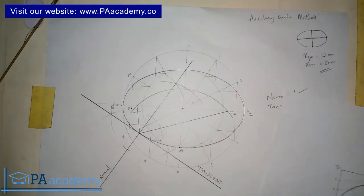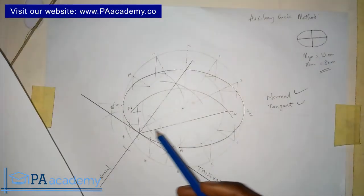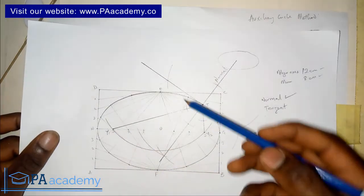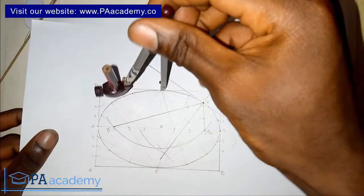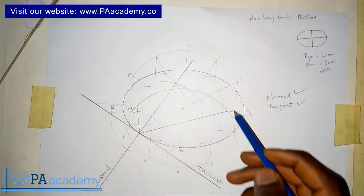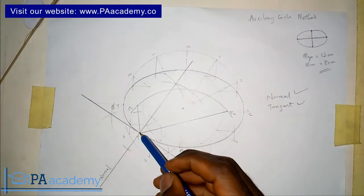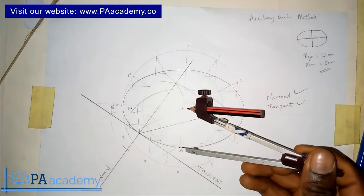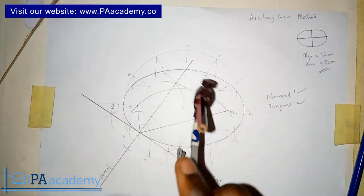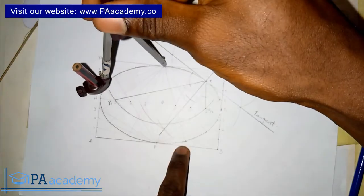Now let's quickly compare example one and example two. In example one we picked our given point at the upper right of the ellipse, while in example two we picked our point here. One significant difference is the direction of the arc: in example one the arc is drawn one way, but in example two the arc curves differently. The key principle is that wherever your given point is on the ellipse, that is where you place the compass to draw the arc locating F1 and F2.